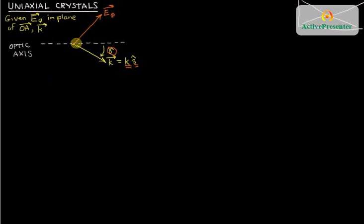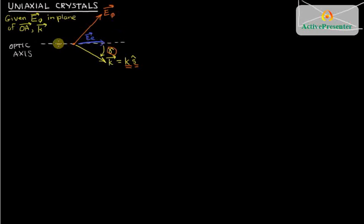The electric field in a birefringent case can be broken into two components: a component along the optic axis, which we call E-extraordinary, because that electric field oscillating in that direction feels chi-extraordinary — that's the definition of the optic axis — and a component perpendicular to the optic axis, which we call E-ordinary. Oscillations in this perpendicular direction are what we call within-slice, and they experience susceptibility chi-O.